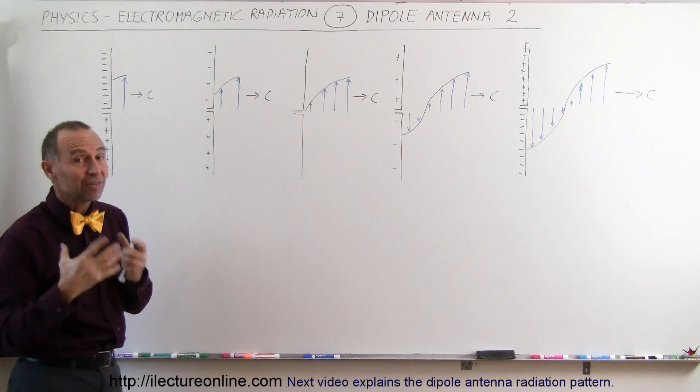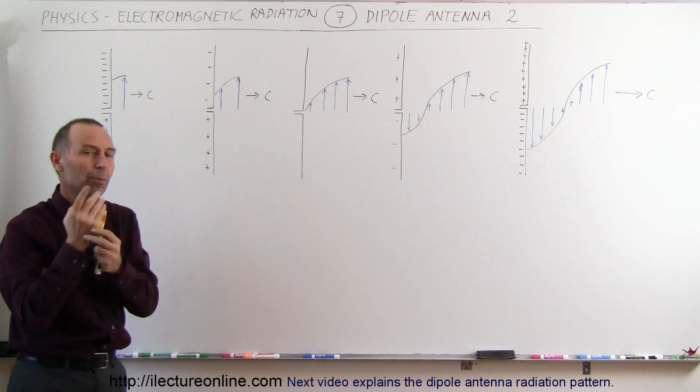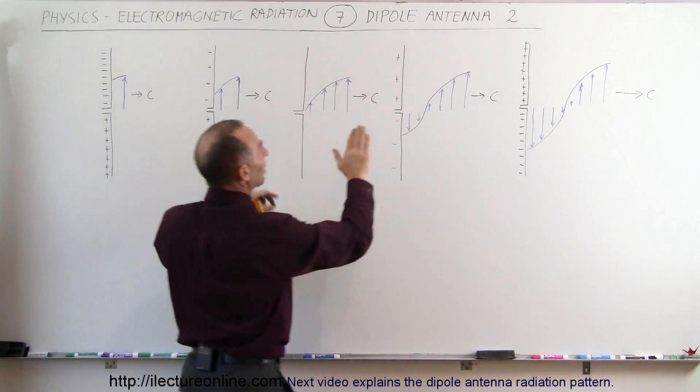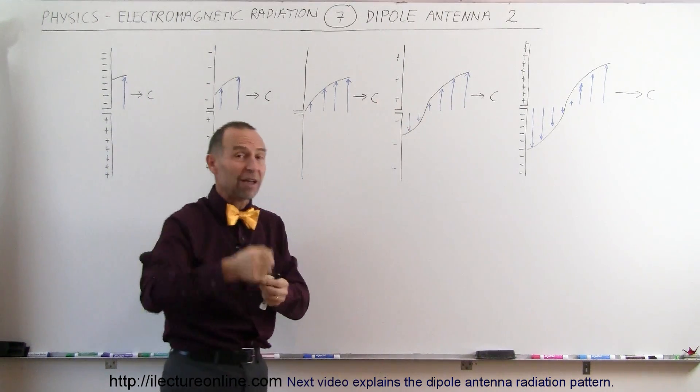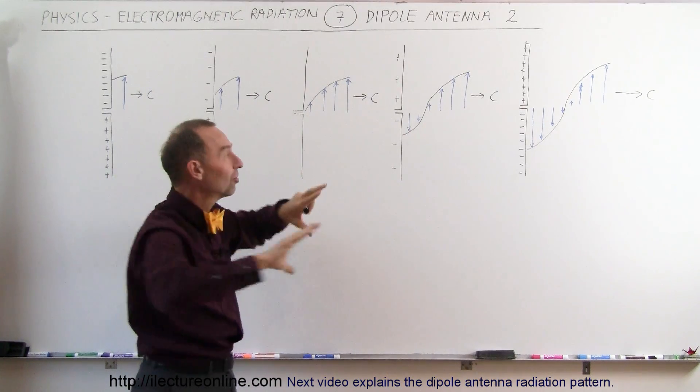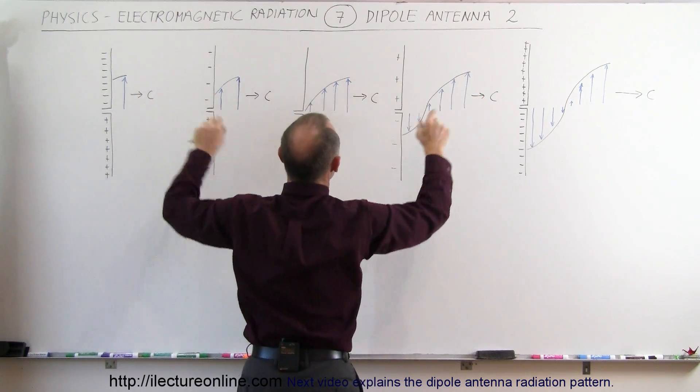At the same time as that is happening, you have magnetic field changes that occur which are perpendicular to the electric field changes. And notice as the electric field emanates, now of course if you have a single dipole antenna that is going to emanate in all 360 degrees in all directions, so that's going to be a wave going in all directions, front and back, left and right.